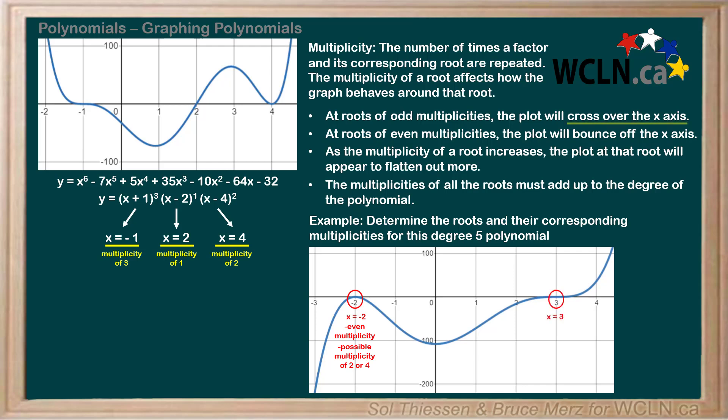At this root, we see the plot cross over the x-axis, which is characteristic of roots of odd multiplicities. So we can conclude that this root is of odd multiplicity. Again, we know that the multiplicities of all the roots must add up to the degree of the polynomial, so the multiplicity of this root can't be greater than the degree, 5. That means it could have a possible multiplicity of 1, 3, or 5.